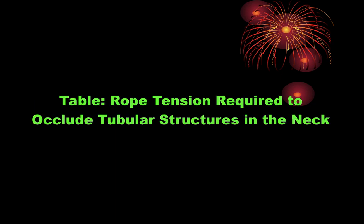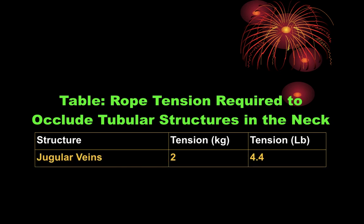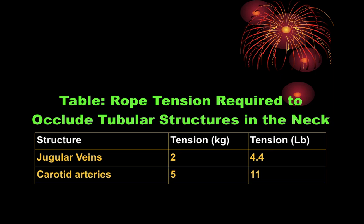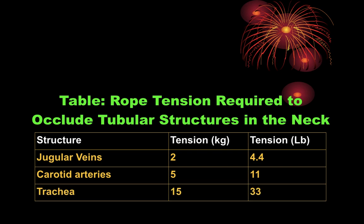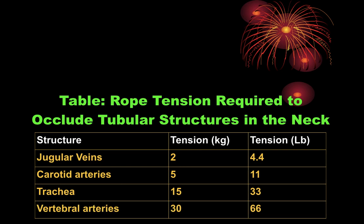To block the vertebral arteries, 30 kg is required, which completely blocks the arterial supply to the brain. In summary: jugular veins require 2 kg (4.4 lbs), carotid arteries about 5 kg (11 lbs), trachea about 15 kg (33 lbs), and vertebral arteries 30 kg (approximately 66 lbs) of pressure.